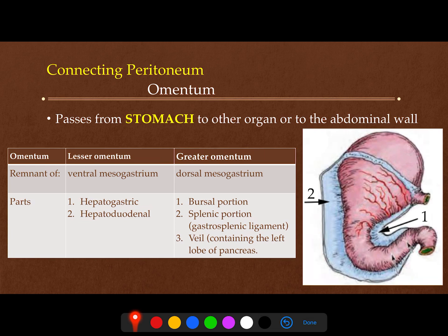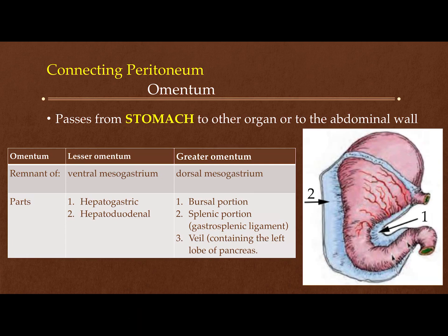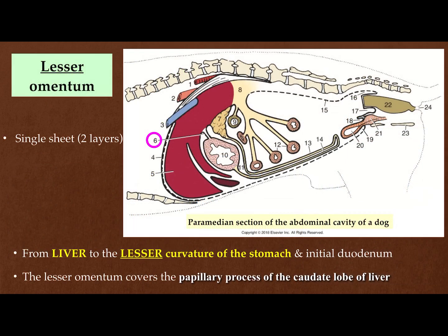The greater omentum has three main parts: the part which forms the bursa is called the bursal portion; the part containing the spleen is called the splenic portion, present between the stomach and the spleen and called the gastrosplenic ligament; and the third part contains the left lobe of the pancreas. Let us see this in a paramedian section of the abdominal cavity of the dog.